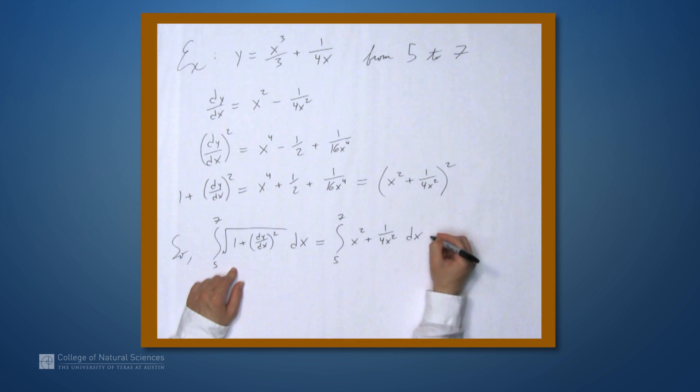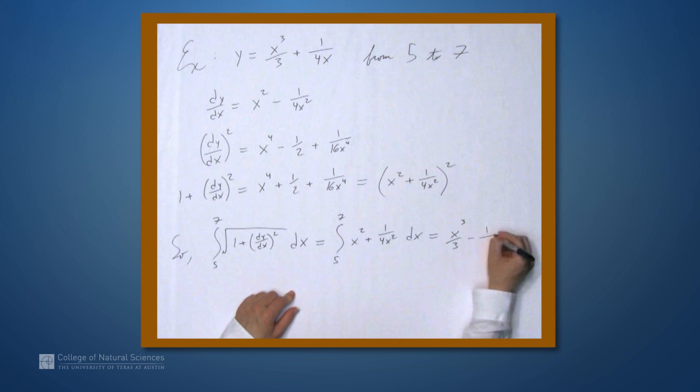And then when we find the antiderivatives of these things, we get x cubed over 3 minus 1 over 4x, and we're evaluating that from 5 to 7.